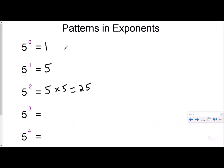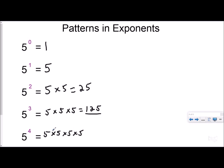Five to the third power, or five cubed, tells me to do five times five times five. Five times five is 25, and then multiply that by five, which is 125. So five to the third power is another way of saying 125. Five to the fourth power would be five times five times five times five — five times five is 25, times five is 125, times five is 625. So five to the fourth power is another way of saying 625.